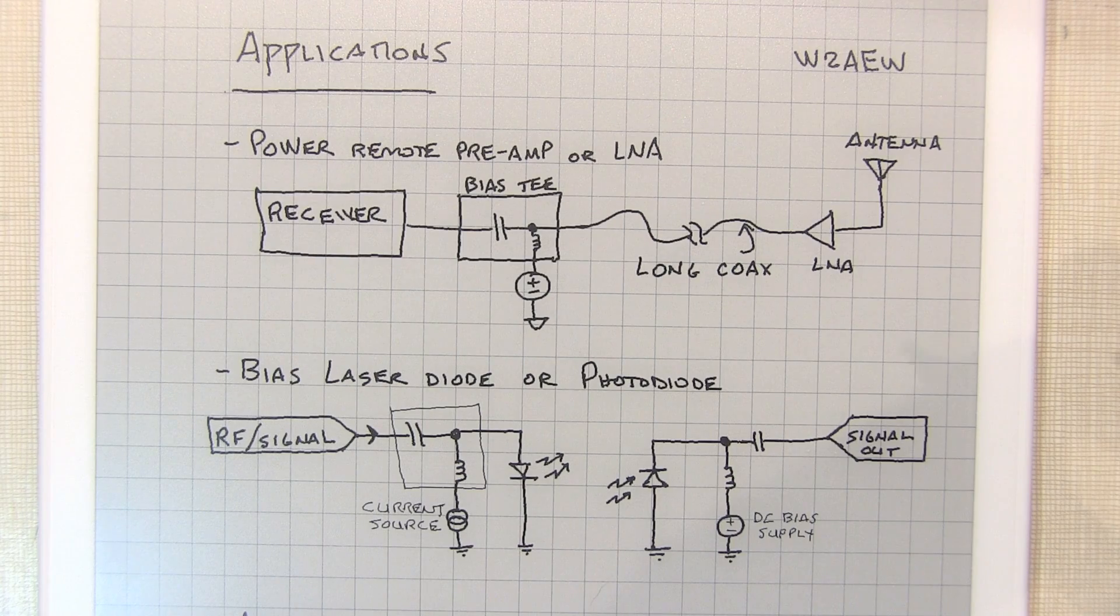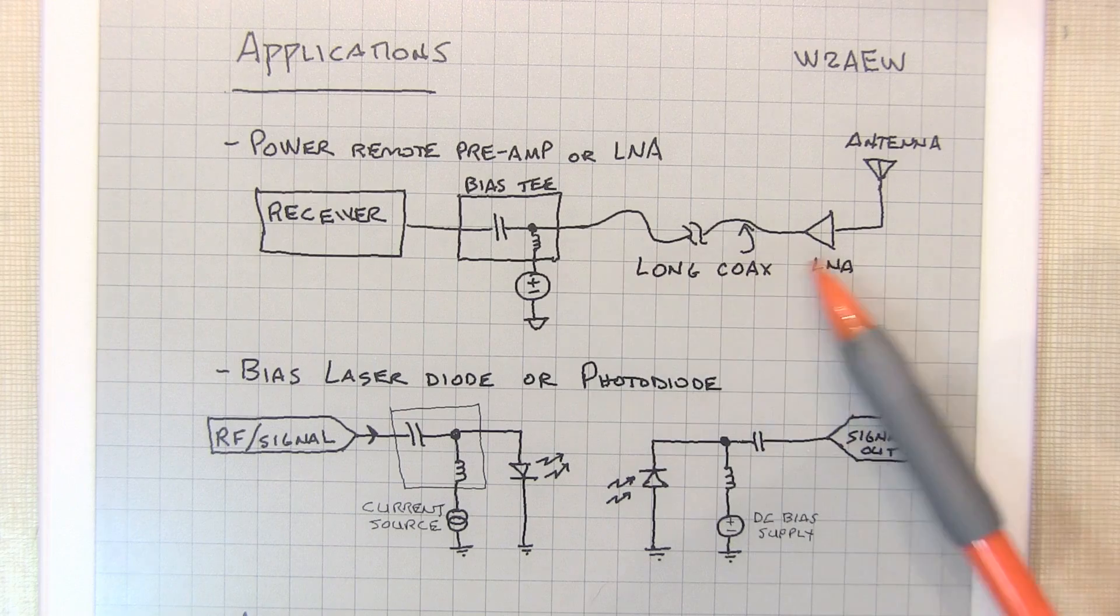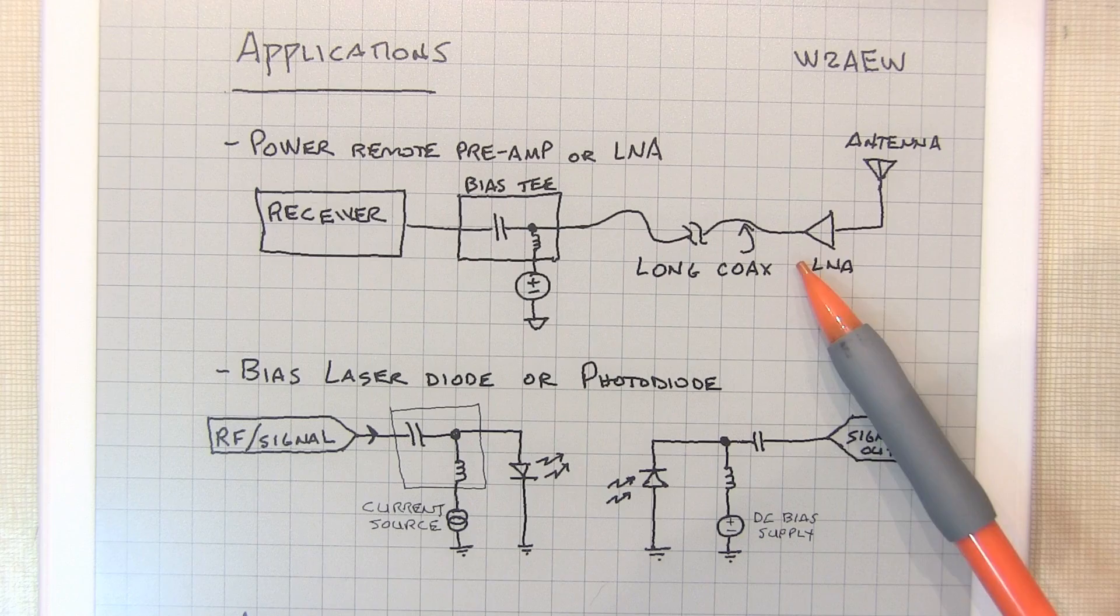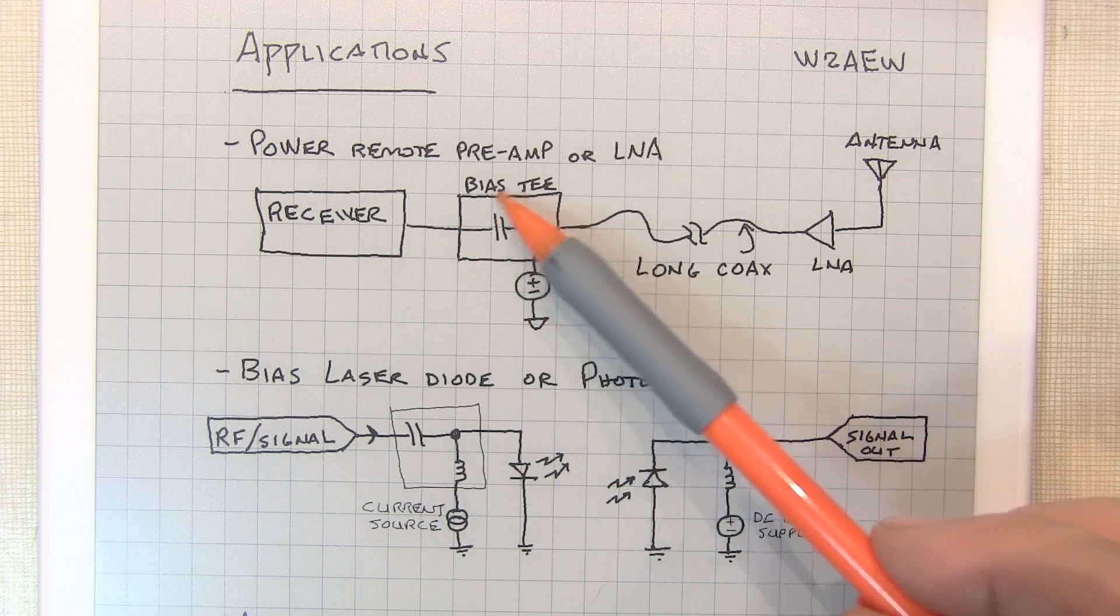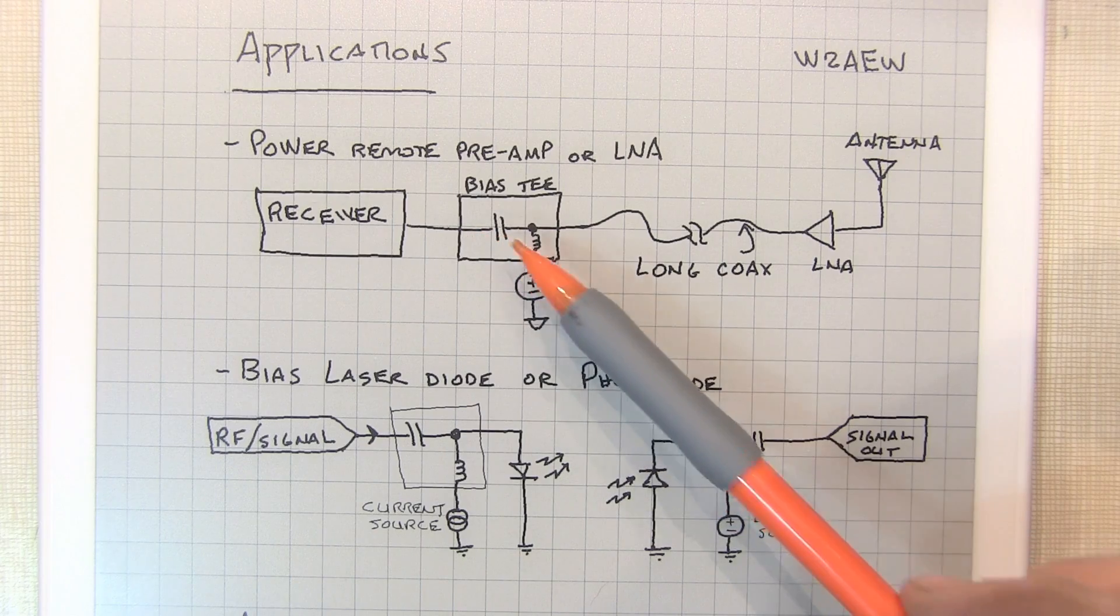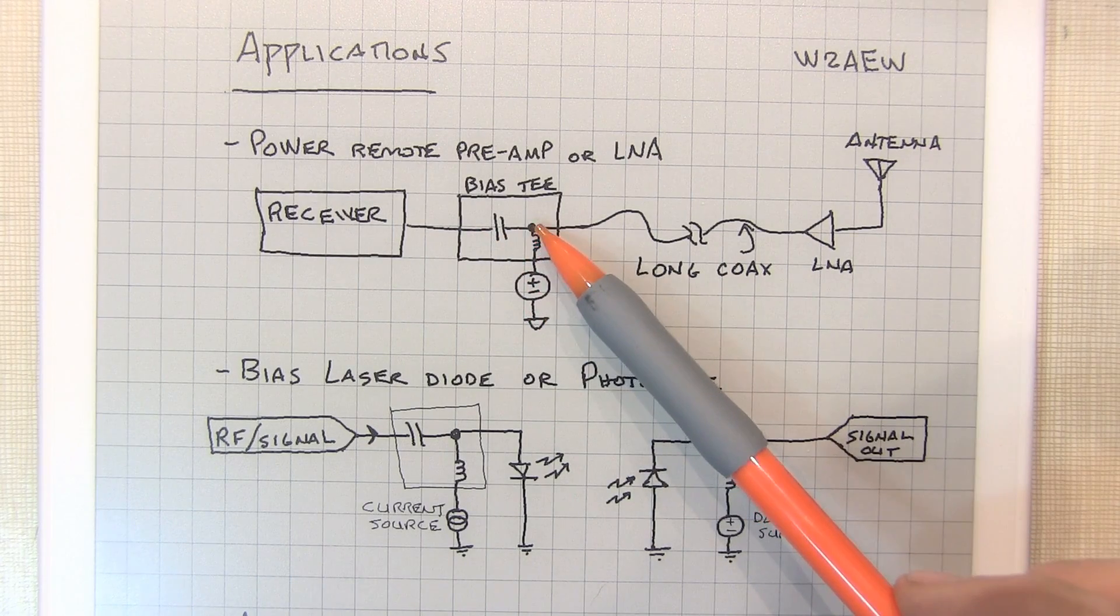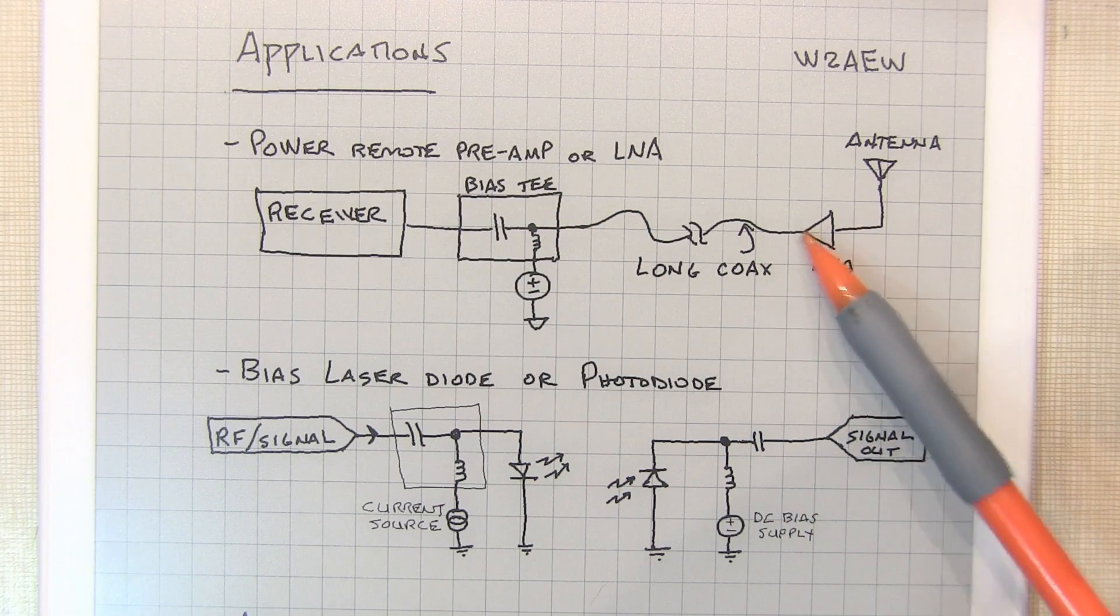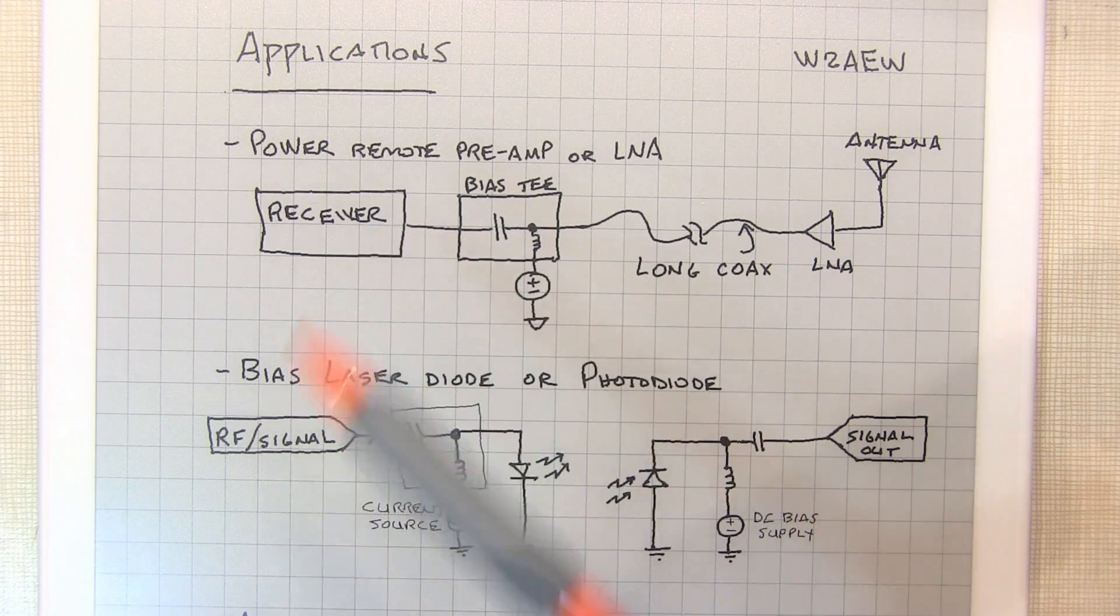Probably one of the most common uses for bias tee is to power up an LNA or a low noise amplifier that might be mounted at an antenna, maybe up a mast or something pretty far away from where the receiver is. The bias tee would be applied here so that we can apply a power supply voltage to the center of the coax to run out to the amplifier and power the amplifier up, and then the RF from the amp will just simply pass through the bias tee to the receiver.